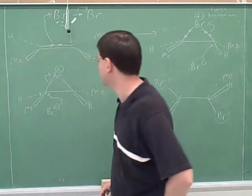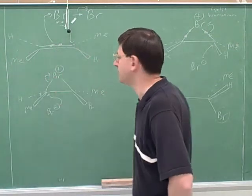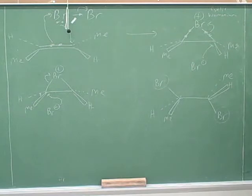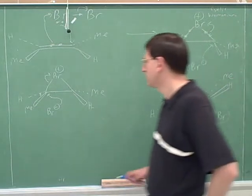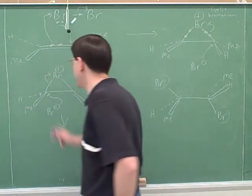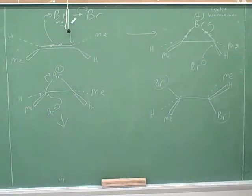The second bromine could just as well attack the left-hand carbon as the right-hand carbon. They're really symmetrical to each other, so it could just as well attack either of them. Let's draw what the product would be when the second bromine attacks the left-hand carbon.